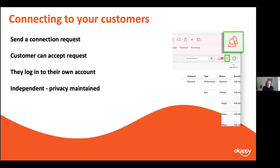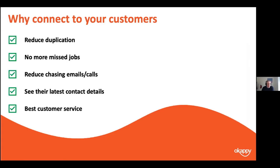Privacy is key. If you assign a job to a subcontractor, your customer can't see who that subcontractor is — you don't want to be cut out of the loop. To summarize benefits of connecting to customers: it reduces duplication, means fewer missed jobs and less chasing of emails and calls. Like any network — LinkedIn, Facebook — if you update your contact details, your customers and subcontractors see that straight away. Likewise, if customers update their details, you see it immediately. So no more risk of invoices or job sheets going to the wrong address, and ultimately you can provide the best customer service.